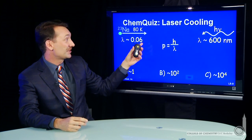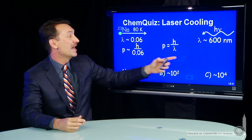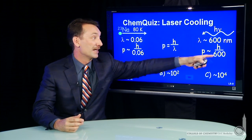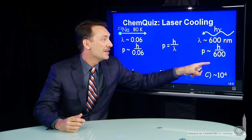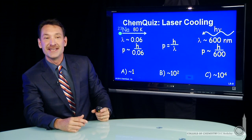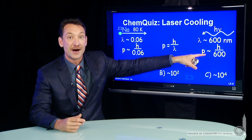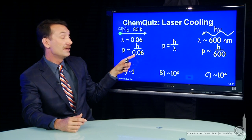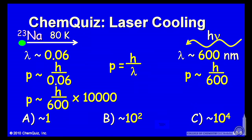We can do that by just calculating the momenta of each. The momenta are related by their wavelength via the de Broglie relationship. The momenta of the photons are about 10,000 times smaller than the momenta of the sodium atoms, so we need about 10,000 photons to about stop a sodium atom.